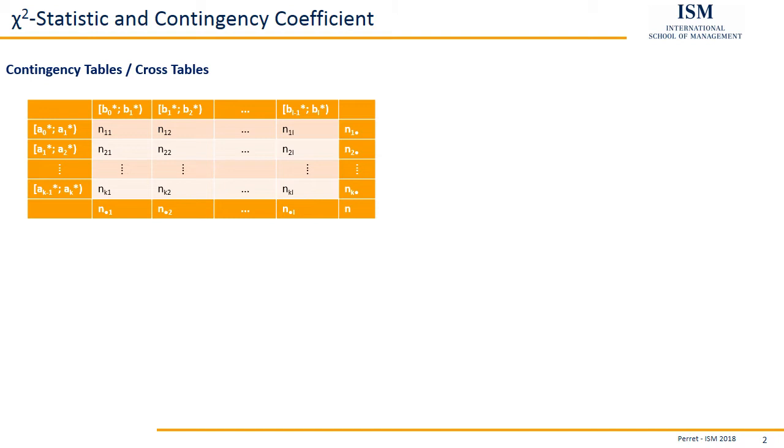So the n1 dot, that's n11 plus n12 plus n13 up to plus n1l. So all of them are added up. The same for the corresponding n dot 1, which is n11 plus n21 and so forth up to plus nk1. So much for the theoretical background on cross tables.